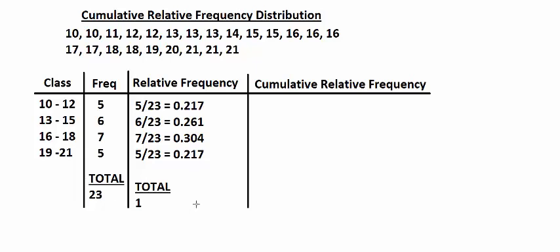Now we're going to construct a cumulative relative frequency distribution. A cumulative relative frequency distribution looks at the percentage or the chances of being in a particular class or before — so within this class or a previous class. It's cumulative.